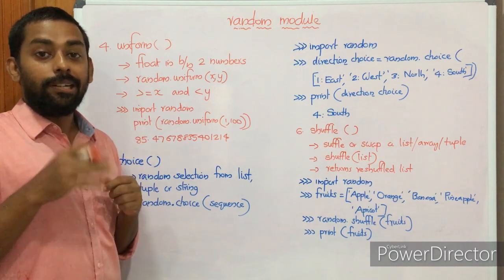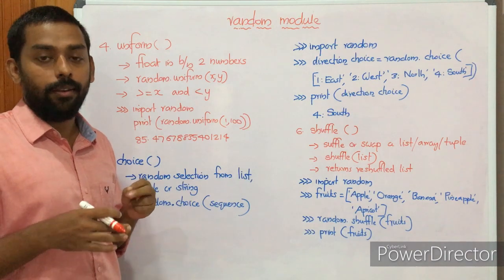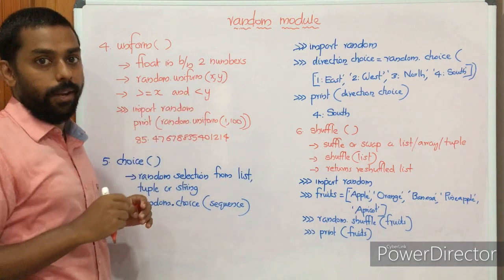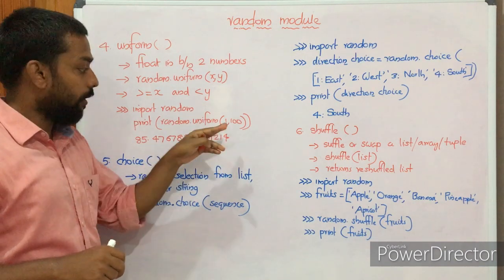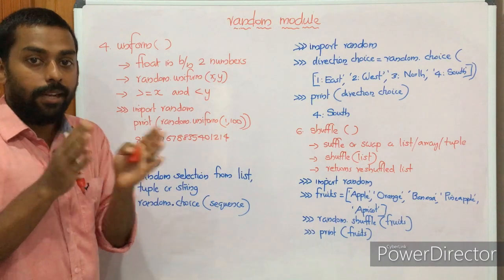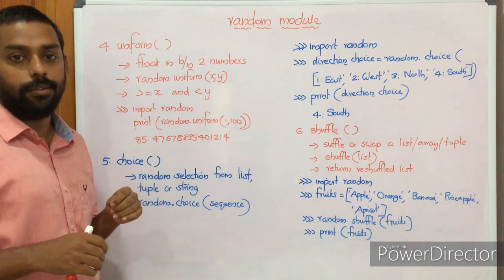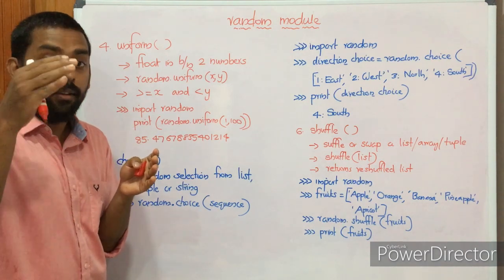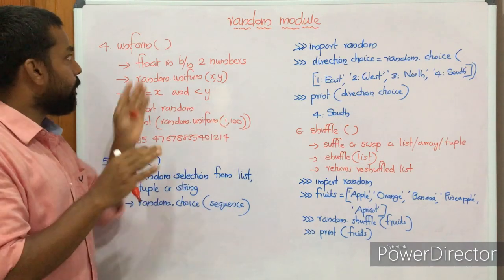Our next function is uniform. It returns a random floating point value between two numbers and follows the syntax random.uniform(x, y). The value must be greater than or equal to x and less than y. For example, random.uniform(1, 100) returns a random floating point value like 85.4767 in that range.